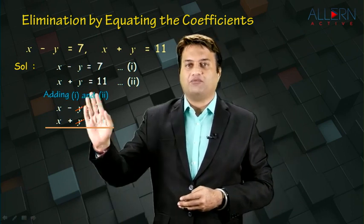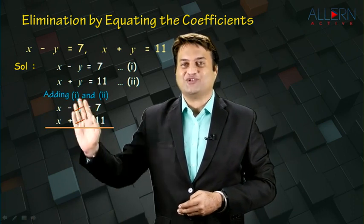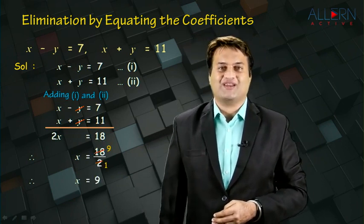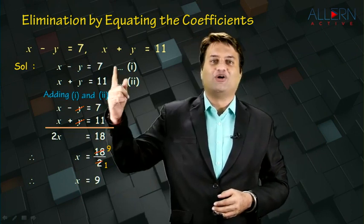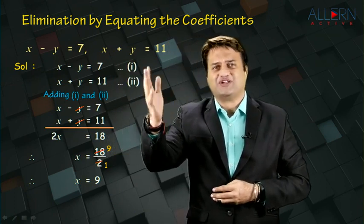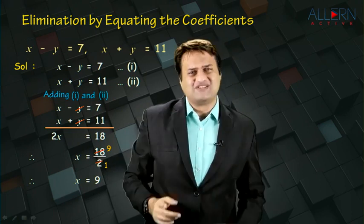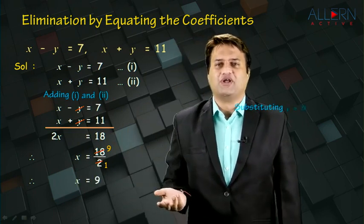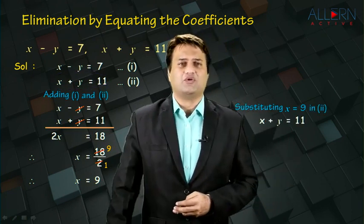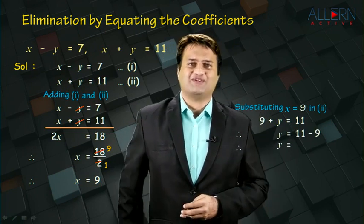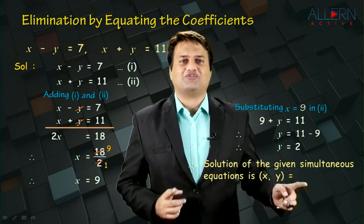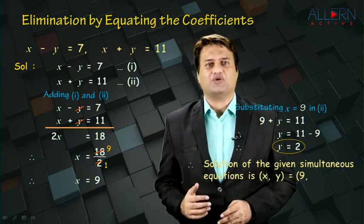Let us add equation 1 and equation 2. When we add, minus y plus y gets cancelled, so y gets eliminated. What remains is 2x equals 18, giving x equals 9. Once you get the value of one variable, substitute it into either equation — always choose the simpler one. Substituting x equals 9 in equation 2: 9 plus y equals 11, so y equals 11 minus 9, therefore y equals 2. The solution of the given simultaneous equations is x comma y equals 9 comma 2.